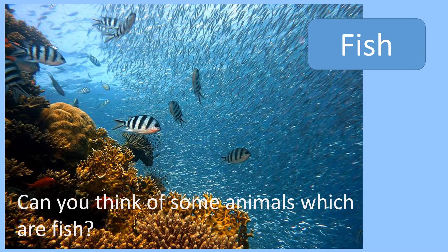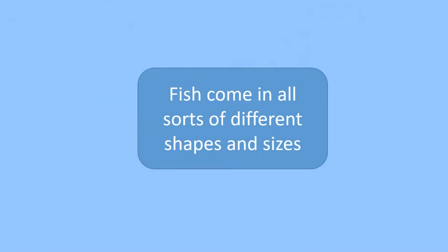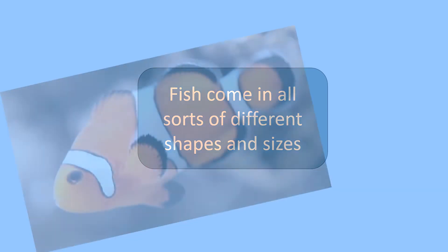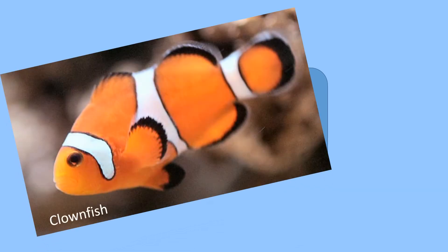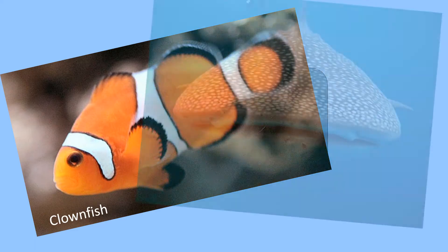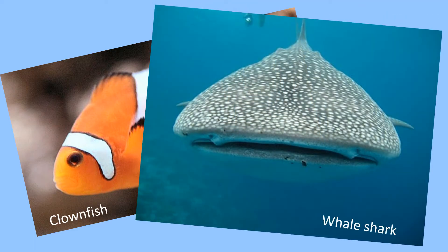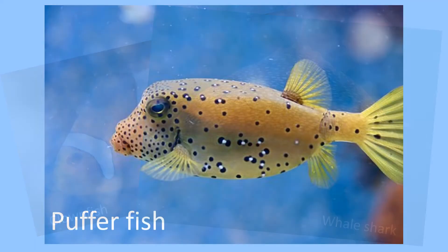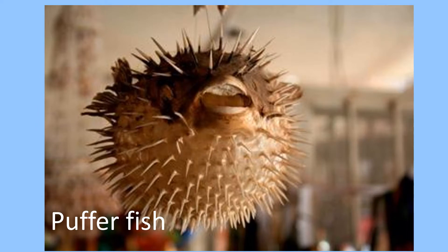Can you think of some animals which are fish? Fish come in all sorts of different shapes and sizes, from this small colourful clownfish to the huge whale shark. Some fish can even change their shape, like this pufferfish puffing out to make himself look bigger to scare away predators.